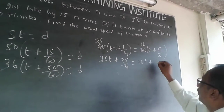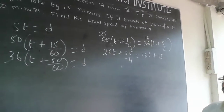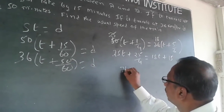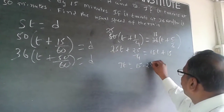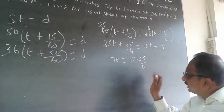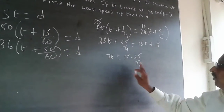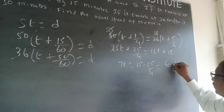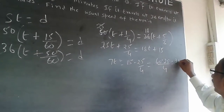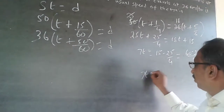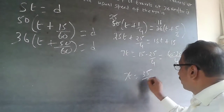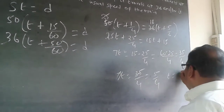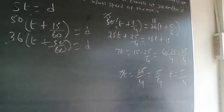18 × 5/6 = 15, so 25T + 25/4 = 18T + 15. Bringing the T terms together: 7T = 15 − 25/4. Finding the LCM of 4: this becomes 60/4 − 25/4 = 35/4. So 7T = 35/4, which gives T = 5/4.